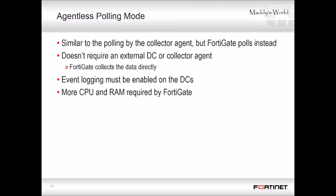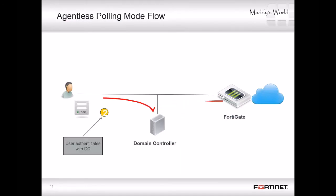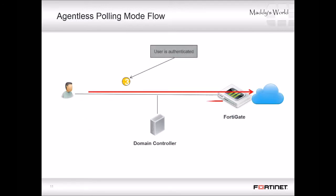You can alternatively deploy FSSO without installing any agents. FortiGate will poll the DCs directly instead of receiving login information indirectly from a collector agent. Because FortiGate collects all of the data by itself, remember the DCs never initiate contact with FortiGate to send login information. This method requires significantly greater system resources on your FortiGate and it doesn't scale as easily. There is no collector agent nor any DC agent. After the user logs in, FortiGate will discover that authentication during its next poll, and when the user sends traffic, FortiGate already knows whose traffic that is.